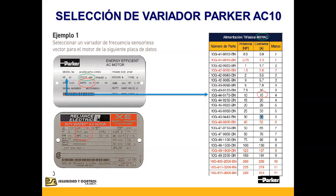Para la selección del AC10, solamente necesitamos saber tres datos importantes de la placa del motor: el voltaje, el consumo o la corriente en amperes del motor, y la potencia normalmente dada en HP. En las tablas de Parker, en la página de Seguridad y Control o en la página de Parker, pueden tener acceso a los catálogos o solicitarlos directamente.